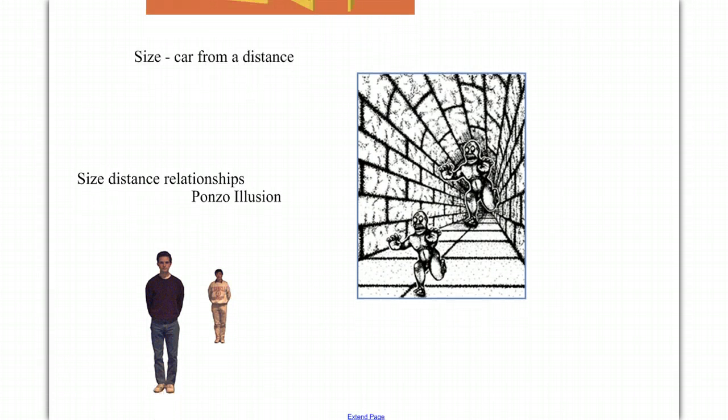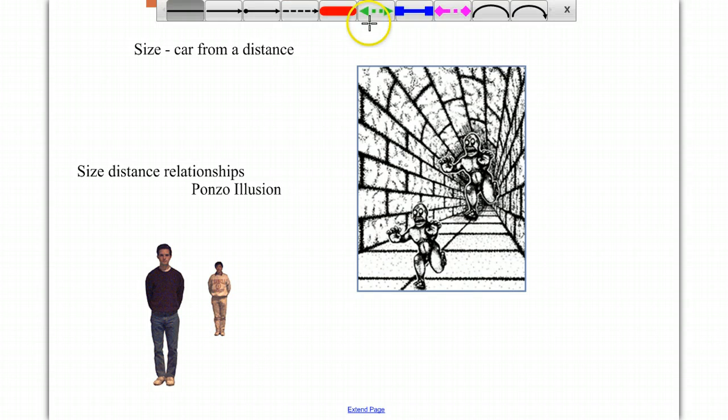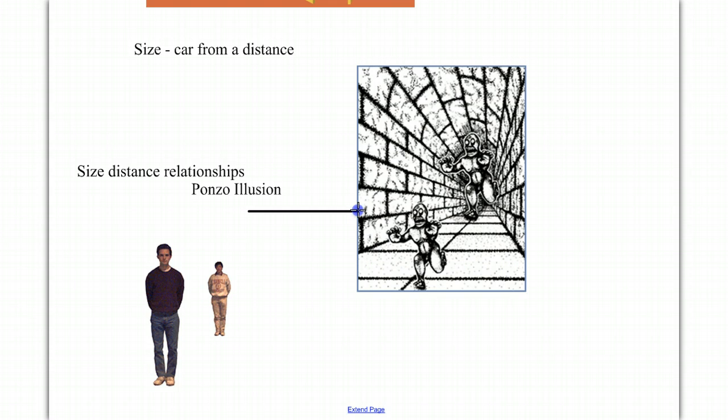In fact, as we talked about last time, this size distance relationship gives us lots of information about distance and size, and it leads us to things like this illusion here, where it appears that this monster in the background is a much larger sized monster than the monster in the foreground, but again, the image on our eye, if we measure it, is exactly the same.